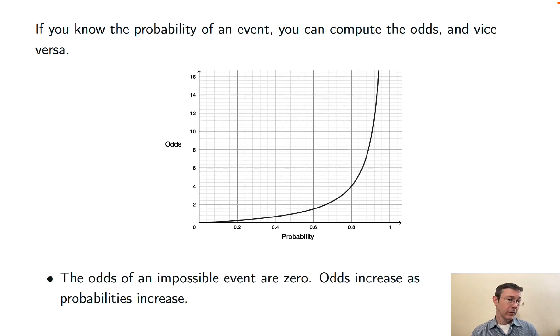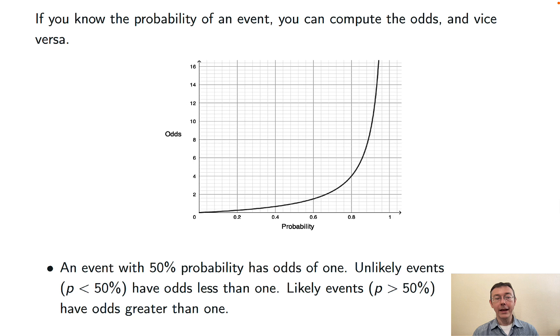In particular, the odds of an impossible event, just like the probability of an impossible event, is zero. Odds increase as probabilities increase. It's helpful to remember that if an event has 50-50 chances, 50% probability, then it has odds of one.